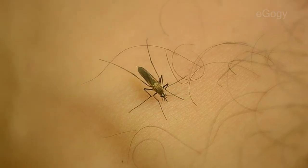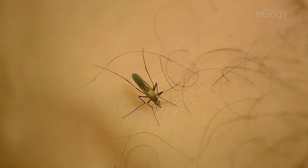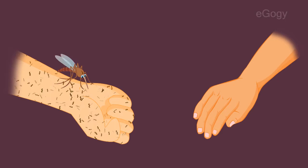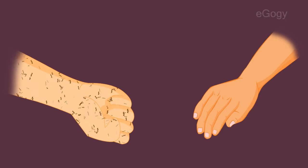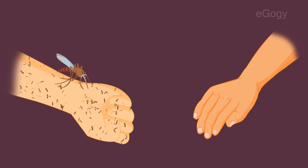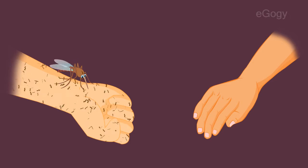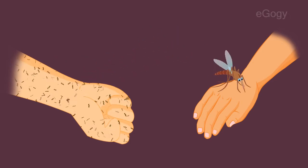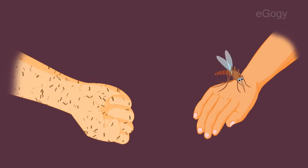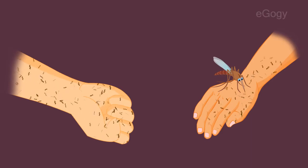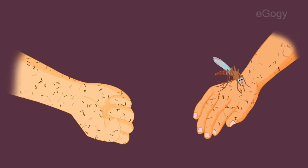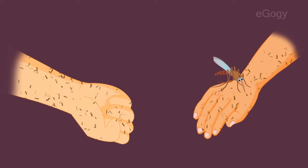When a mosquito bites an infected human or animal, it can pick up a virus along with the blood meal. The mosquito and virus do not harm one another, but the virus reproduces inside the mosquito. Later, the mosquito can pass the virus to other humans when biting them.